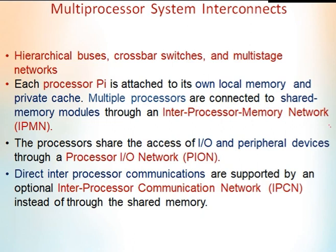What do we mean by multiprocessor system interconnects? Parallel processing demands the use of efficient system interconnects for fast communication among multiple processors, shared memory, IO, and peripheral devices. The commonly used system interconnects for this purpose are hierarchical buses, crossbar switches, and multi-stage networks.